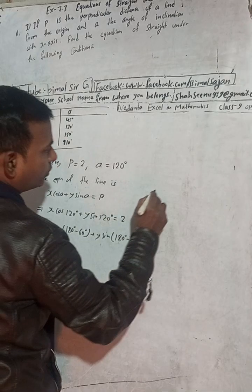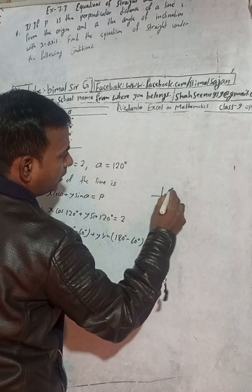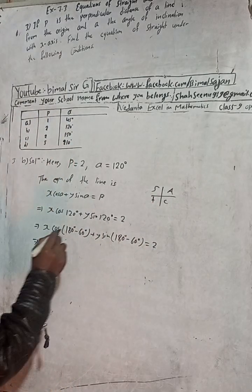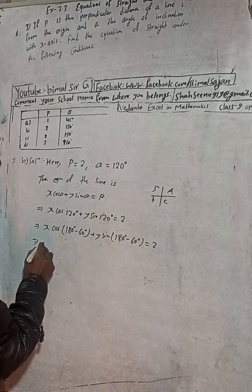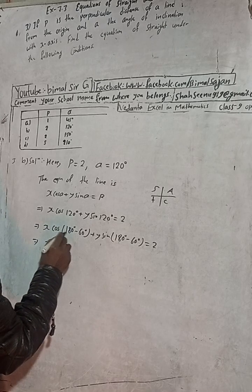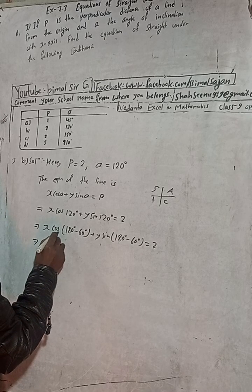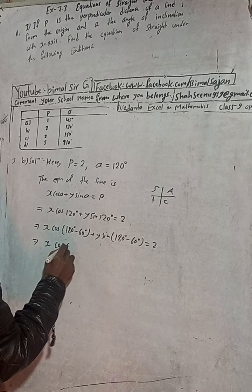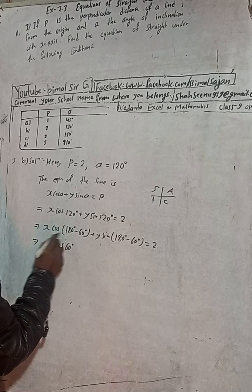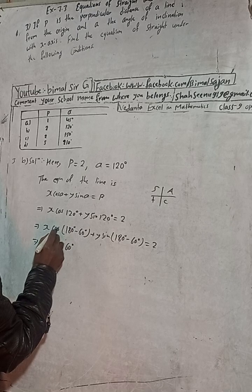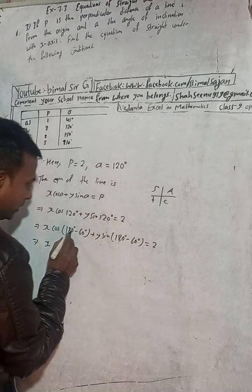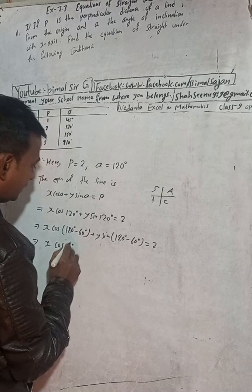Here we use the CAST rule. For 180°, cos remains cos (no function change). If it were 90°, cos would change to sin and cot would change to tan. But since it is 180°, the function stays as cos, applied to 60°.